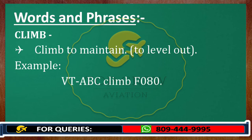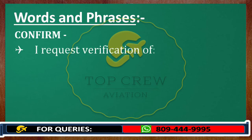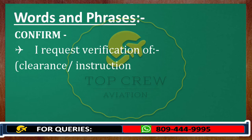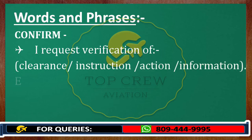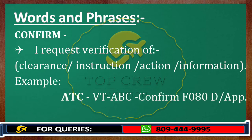Next is Confirm, which means I request verification of clearance. For example, Victor Tango Alpha Bravo Charlie, confirm flight level 080. Delhi Approach.